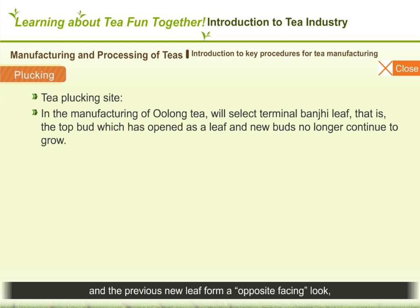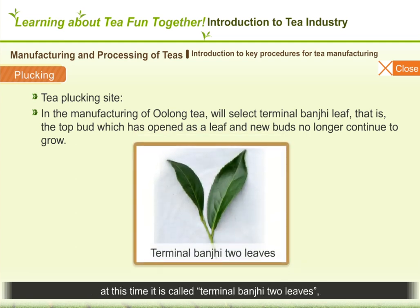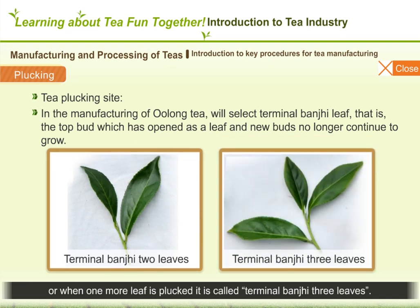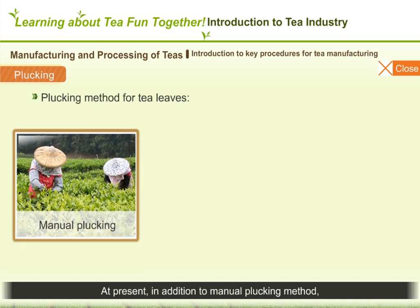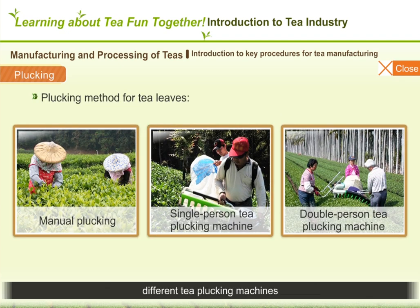The terminal banjee leaf refers to the most recently developed bud tip and the previous new leaf forming an opposite-facing look. At this time, it is called terminal banjee two leaves, or when one more leaf is plucked, it is called terminal banjee three leaves. At present, in addition to manual plucking, different tea plucking machines can also be selected in order to save both time and labor.